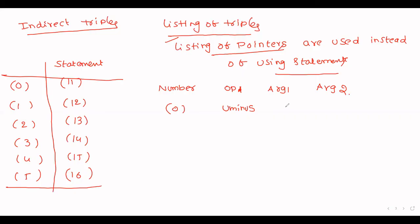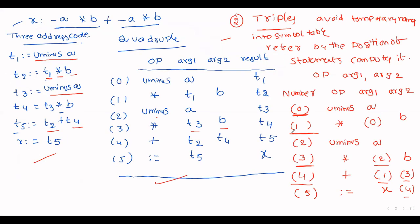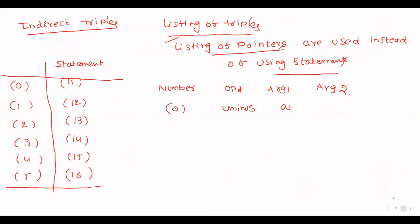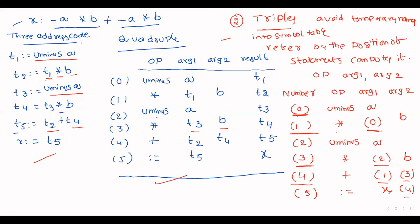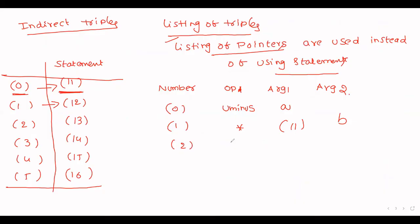My second statement is statement 1: multiply, (0), b. In the indirect representation, instead of writing 0 we refer to the pointer. So 0 is referred to using pointer 11. In the next step, instead of 0 we use 11. The next entry is 2: unary minus, A.